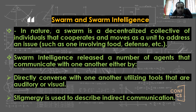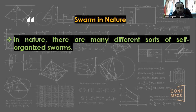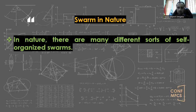Here we have swarm intelligence, which involves a number of agents that communicate with one another, either directly or indirectly. We go back to the term swarm in nature — we have many different sorts of self-organized swarms in nature. Most of our ideas come from nature: we saw what is around us, took the idea, and tried to apply it in our sciences. This idea also came from nature.